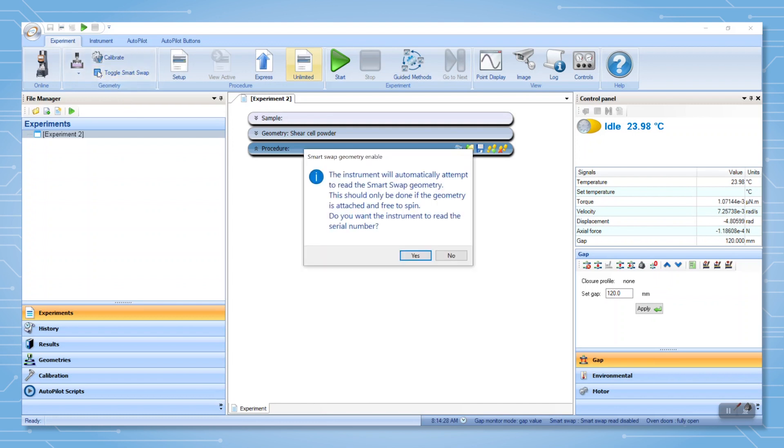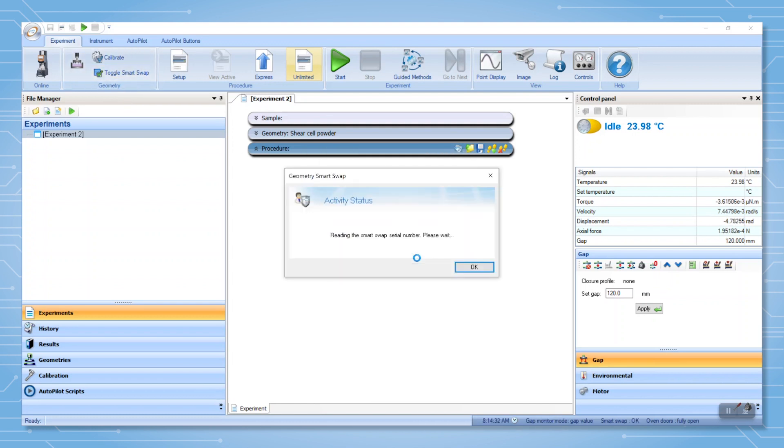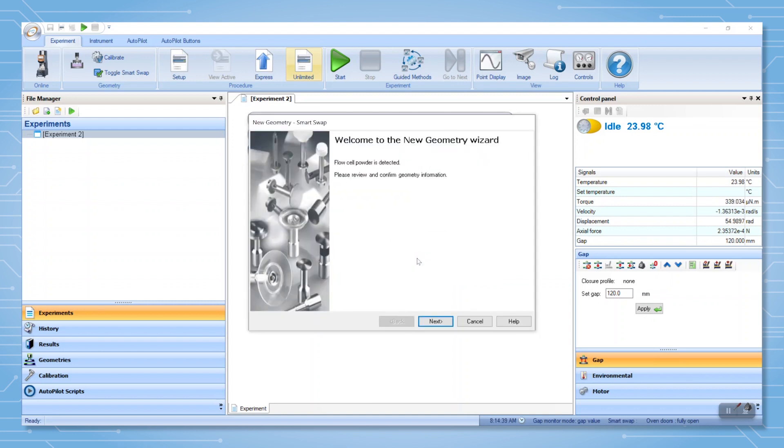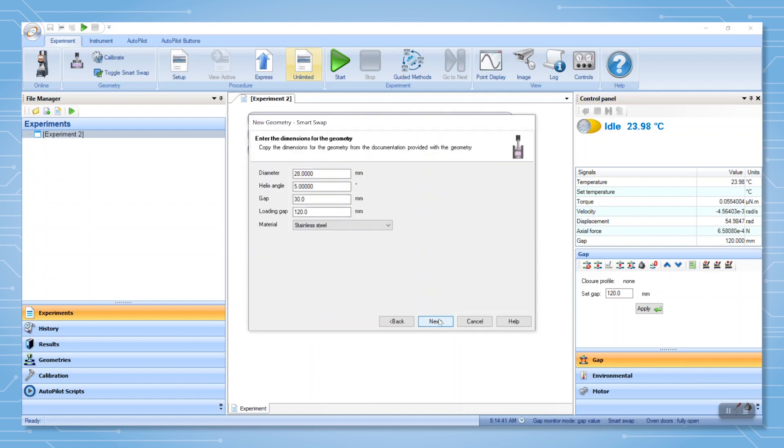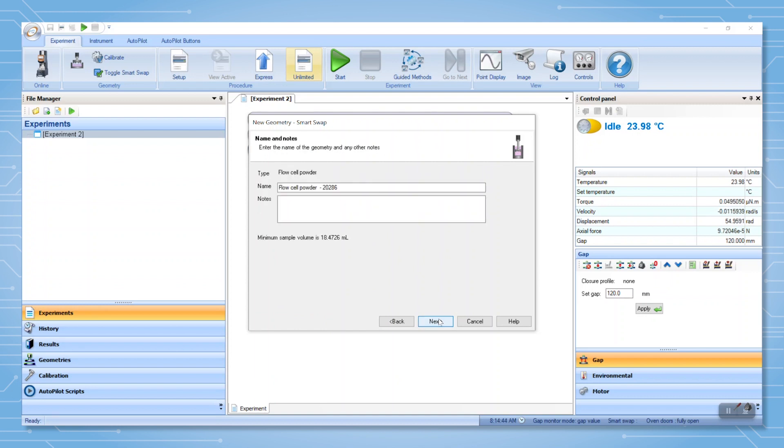With smart swap enabled and showing a green checkmark, the geometry label is red and the new geometry wizard starts automatically. Review the parameters, click next, and finally click finish.